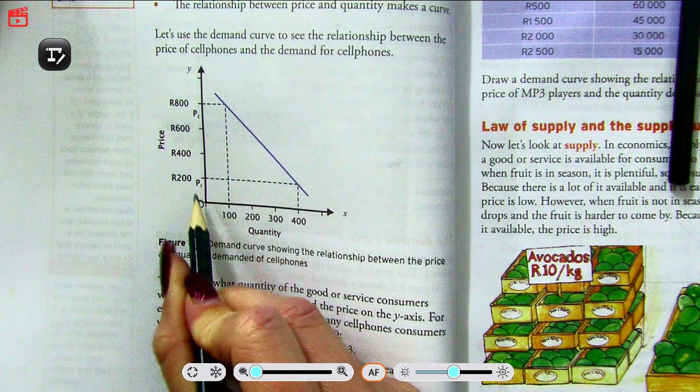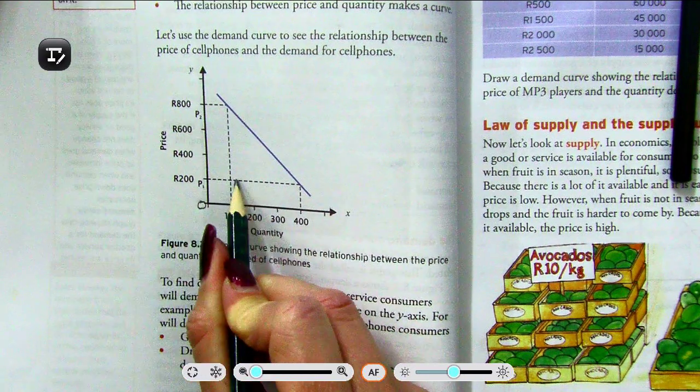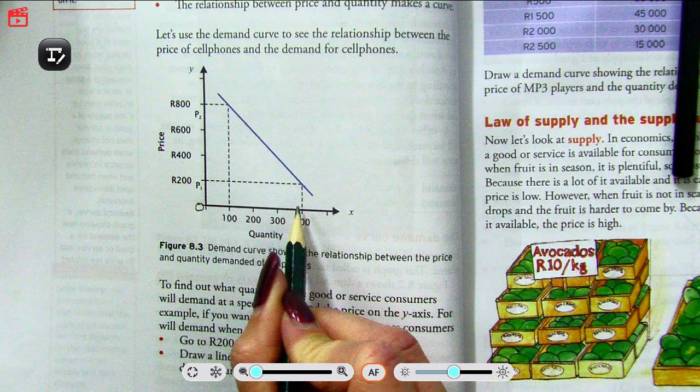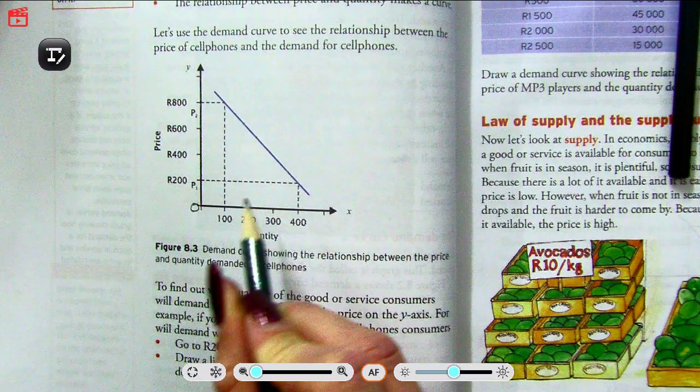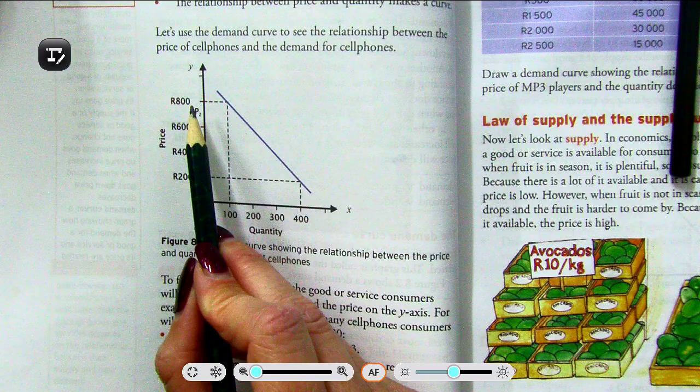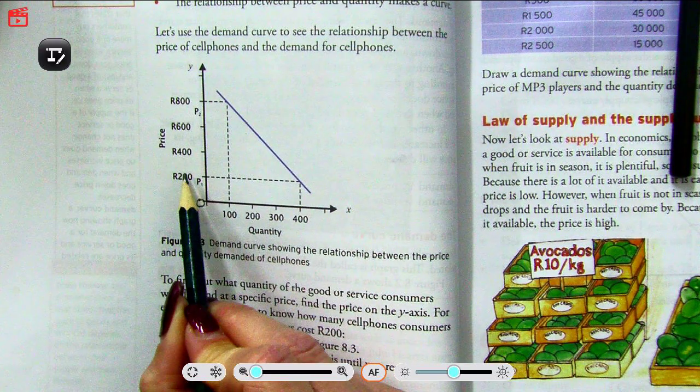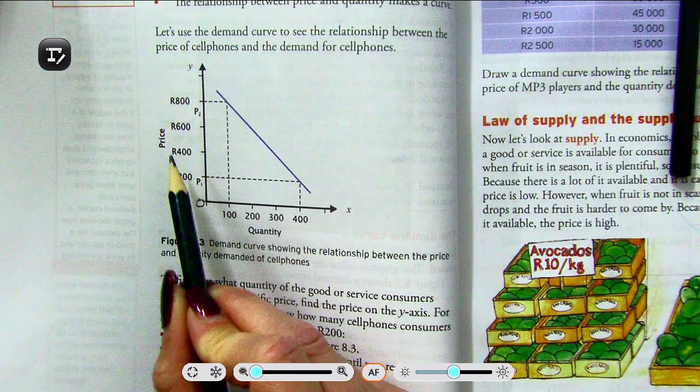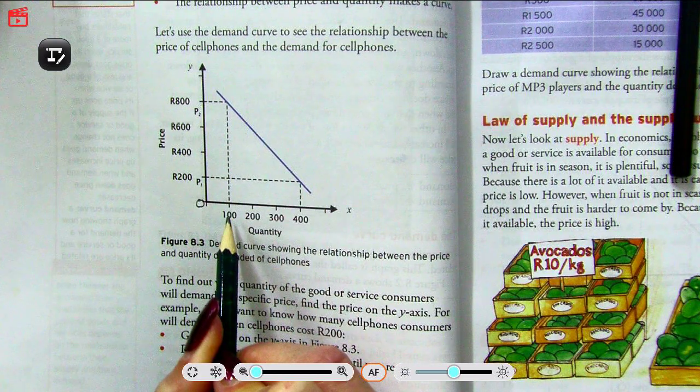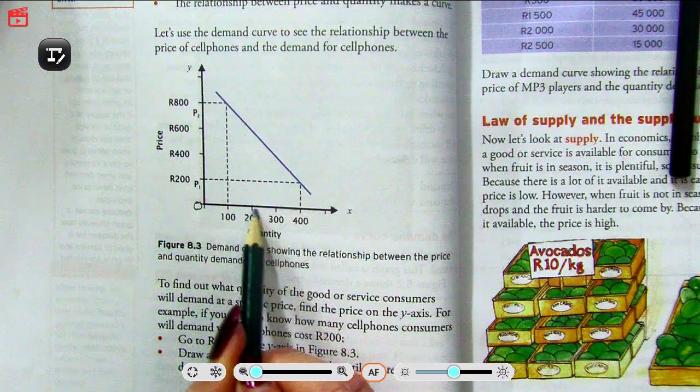We can see here at price 1, which is 200 rand, if we go all the way across, a quantity demanded of 400 will be demanded. Then if we go up to price 2—price 2 is 800 rand, which is obviously more expensive than 200 rand—the quantity demanded will only be 100. Because as the price increases, my quantity demanded decreases.